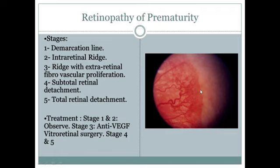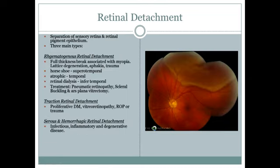Retinopathy of prematurity staging: stage 1 and 2 — observe; stage 3 — anti-VEGF; stage 4 — retina begins to detach, vitreoretinal surgery is needed. Now, retinal detachment is basically the detachment of sensory retina from retinal pigmentary epithelium. There are three types: rhegmatogenous, tractional, and serious/hemorrhagic.